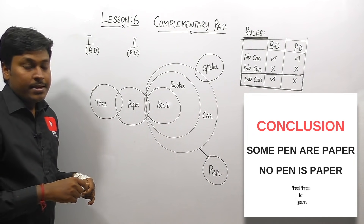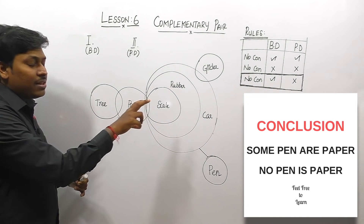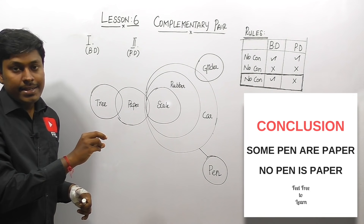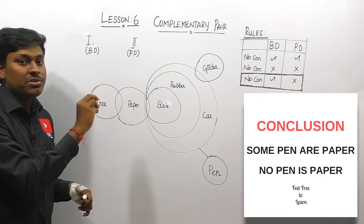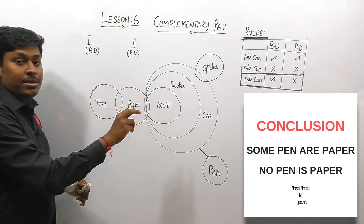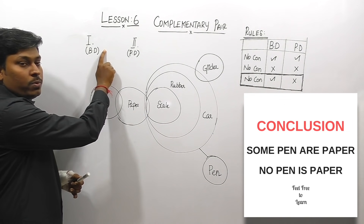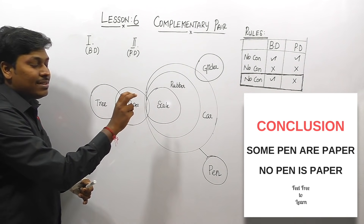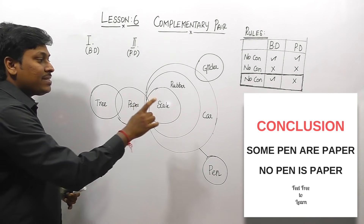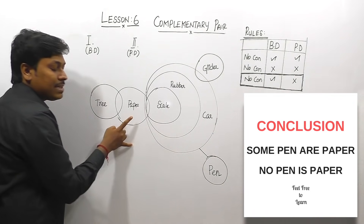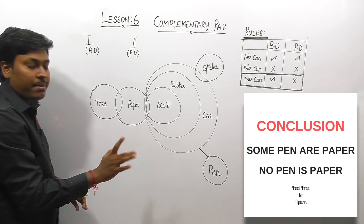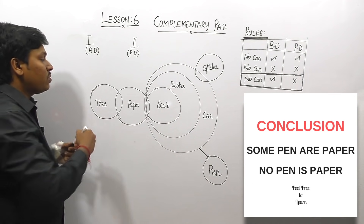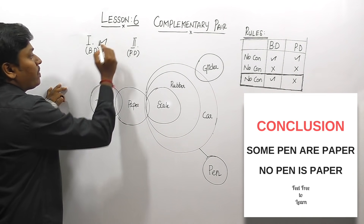The conclusions look like a complementary pair, so our only target is the 'No' conclusion. In the basic diagram there is no connection between pen and paper, so 'No pen is paper' is true. When we move to the possible diagram, the statement says there should be no connection between pen and car, but there is a possibility of connecting pen with paper.